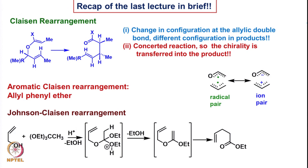In the last class, we looked at some aspects of Claisen rearrangement and the mechanism of the Claisen rearrangement, which is a 3,3-sigmatropic rearrangement. We looked at well-substituted molecules like allyl vinyl ethers. If we keep the geometry of one double bond fixed and make a change in the allylic double bond, we get different products with different configurations.